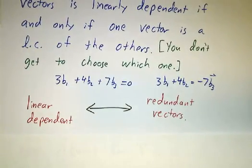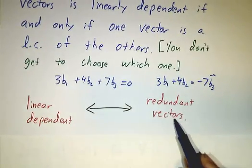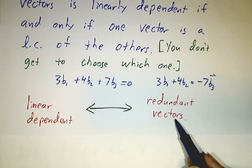So, linearly dependent is like having redundant vectors, vectors that are already built from the other vectors.